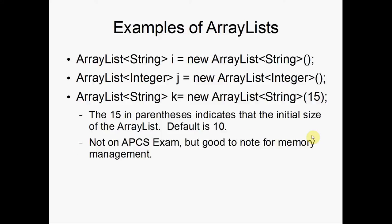Here are a few examples: we have an array list of strings, an array list of integers, and then an array list of strings again but this time the size is changed to 15. By default it'll have 10. This isn't on the AP Computer Science exam, but it's good to know just for memory management in the future.